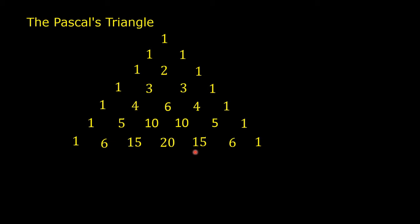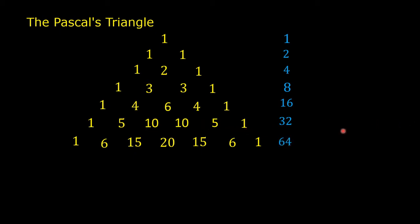The sum of the numbers in any row is a power of 2. Row sums: 1; 1 plus 1 is 2; 1 plus 2 plus 1 is 4; 1 plus 3 plus 3 plus 1 is 8; 1 plus 4 plus 6 plus 4 plus 1 is 16; 1 plus 5 plus 10 plus 10 plus 5 plus 1 is 32; and 1 plus 6 plus 15 plus 20 plus 15 plus 6 plus 1 is 64.